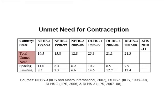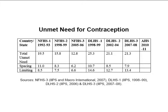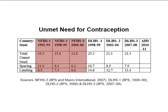However, the unmet need increased, reaching 21.3% as estimated by DLHS-3 (2007–08) for India. Higher levels of unmet need have been recorded in all three rounds of DLHS compared to the three rounds of NFHS.